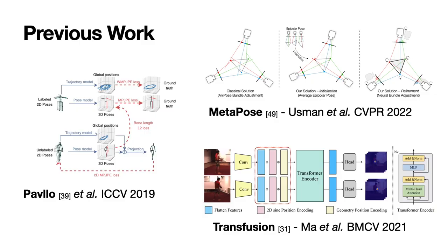Previous work has already tried to shrink the cost of 3D pose data by reducing or even fully omitting 3D ground truth data. Pavlo and his colleagues, for example, strongly reduced the amount of data by using a backpropagation loss. Metapose uses multiple cameras to triangulate poses and subsequently refines them using bundle adjustment. And Transfusion performs cross-view 2D pose refinement using a transformer encoder.